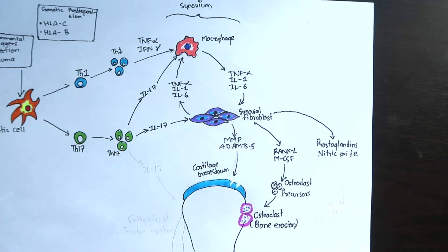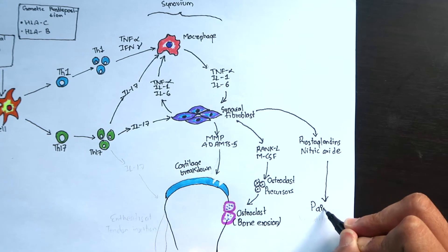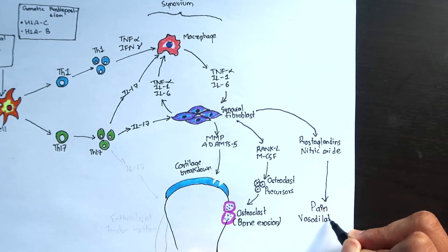The prostaglandins can cause pain and the nitric oxide can cause vasodilation to lure in more inflammatory cells in the synovium.